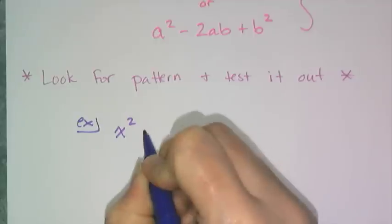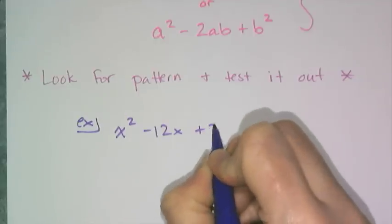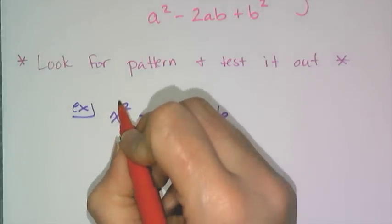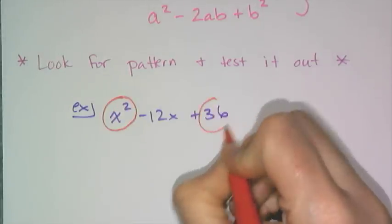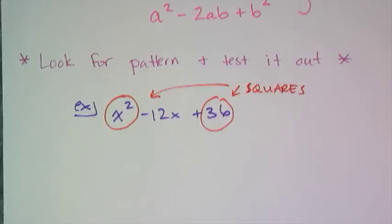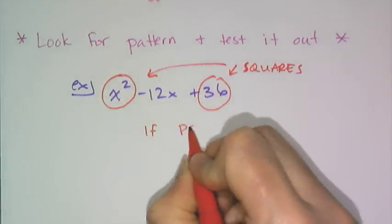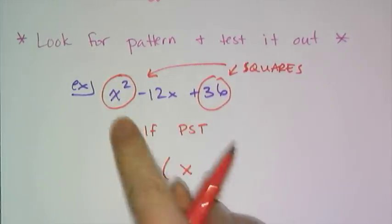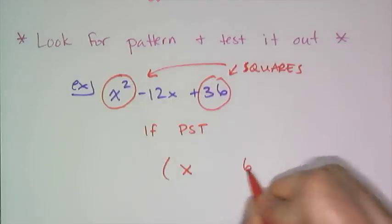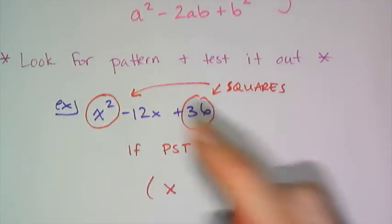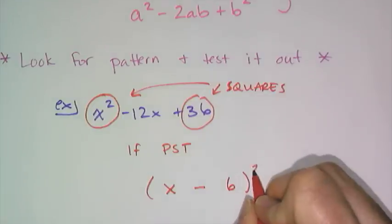For example, x squared minus 12x plus 36 looks like it might be a perfect square trinomial because x squared is a square and 36 is a square. If it is indeed a perfect square trinomial, it's going to factor as (x minus 6) squared, because a squared and b squared become a and b, and the sign is minus.